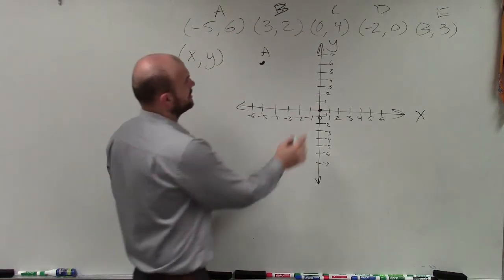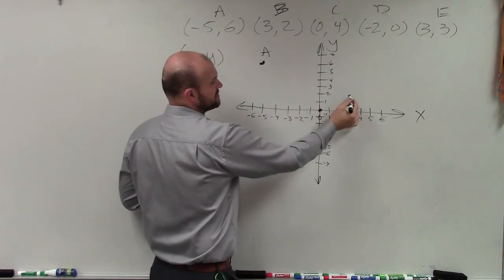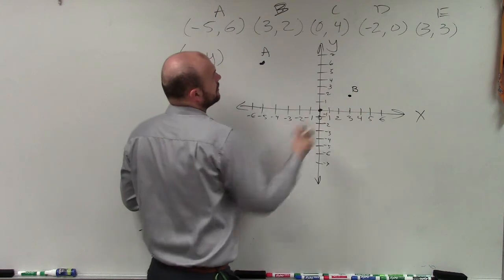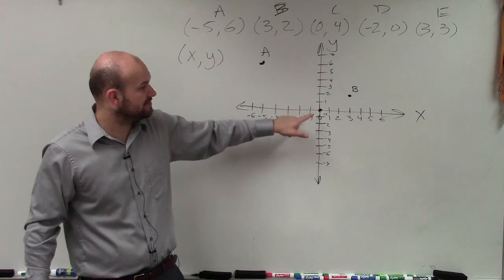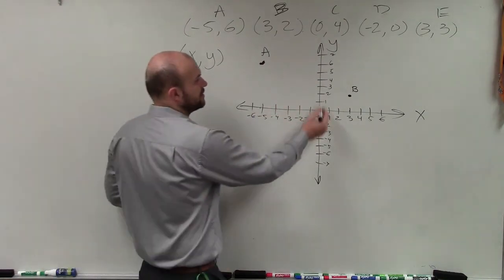For B, I'm going to go my x value is 3, my y value is 2. For C, my x value is 0. That means I'm not going left or right at all. I'm just, but my y value is 4, so I'm going to go up to 4.